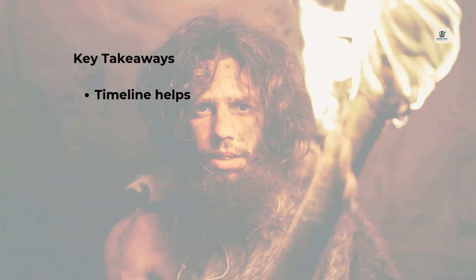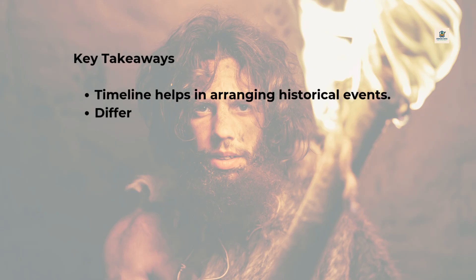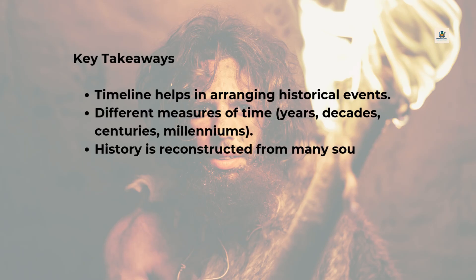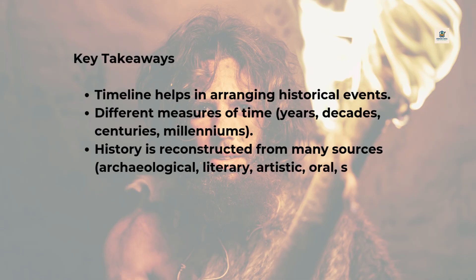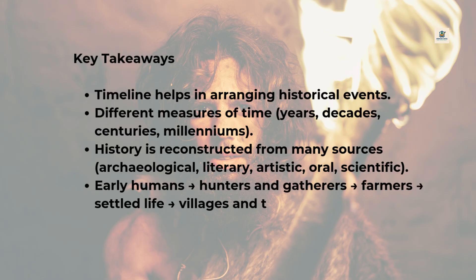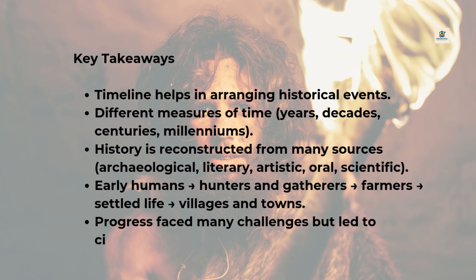Key takeaways: timelines help in arranging historical events. Different measures of time include years, decades, centuries, and millenniums. History is reconstructed from many sources — archaeological, literary, artistic, oral, and scientific. Early humans progressed from hunters and gatherers to farmers to settled life in villages and towns. Progress faced many challenges but led to civilization.